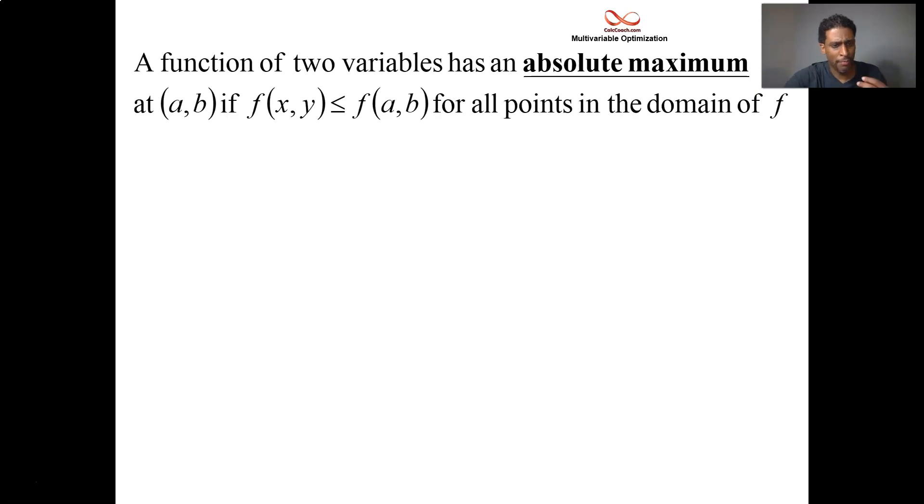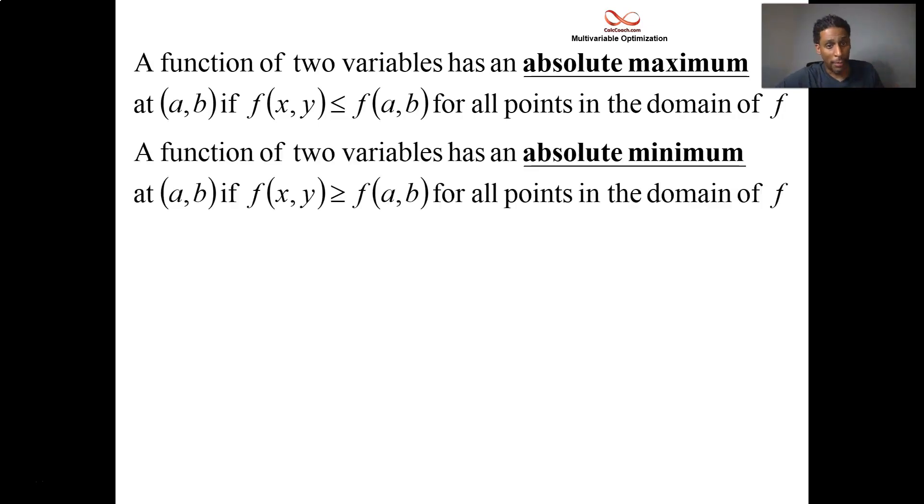First off, definition-wise, what is an absolute maximum? Well, a local maximum was the biggest that the function got in some nearby neighborhood, but an absolute max is going to be the biggest that the function ever gets in the domain of the function. And then there's absolute minimum, the smallest that the function ever gets in the domain of the function.